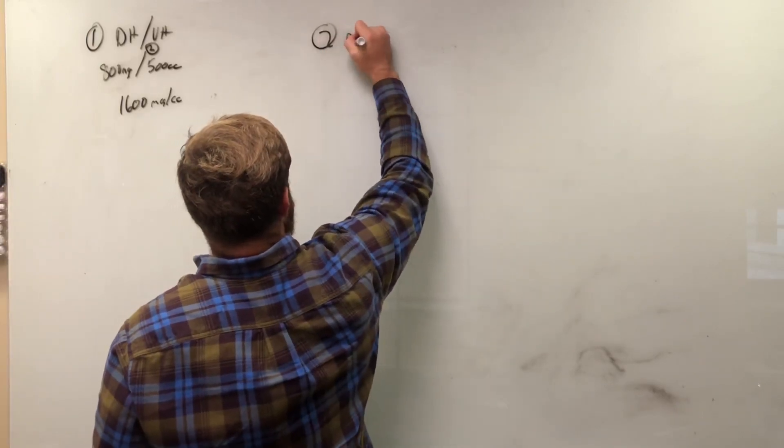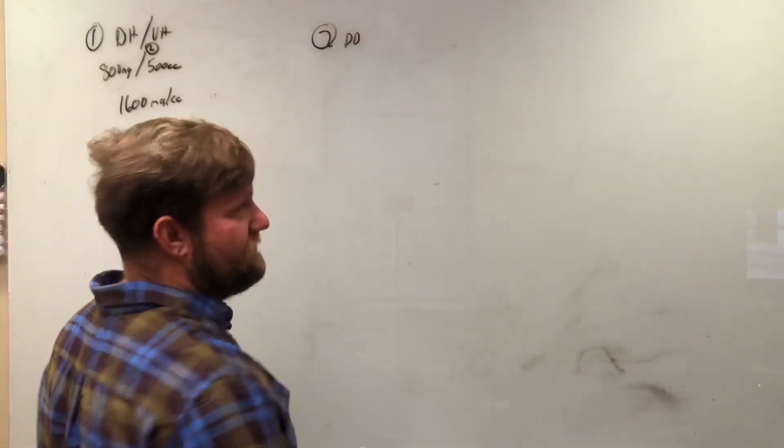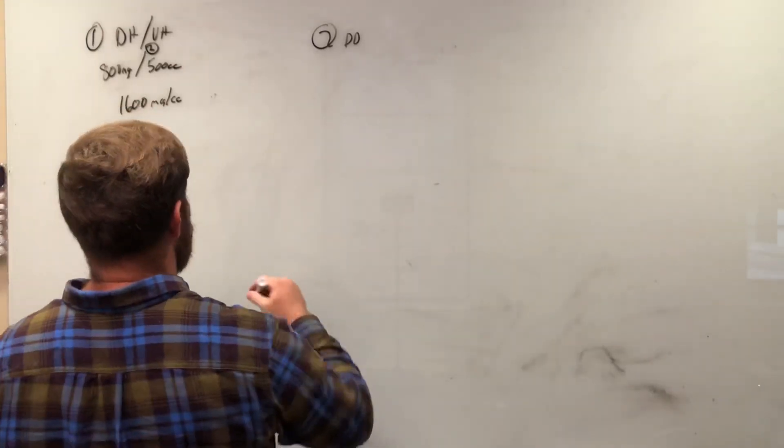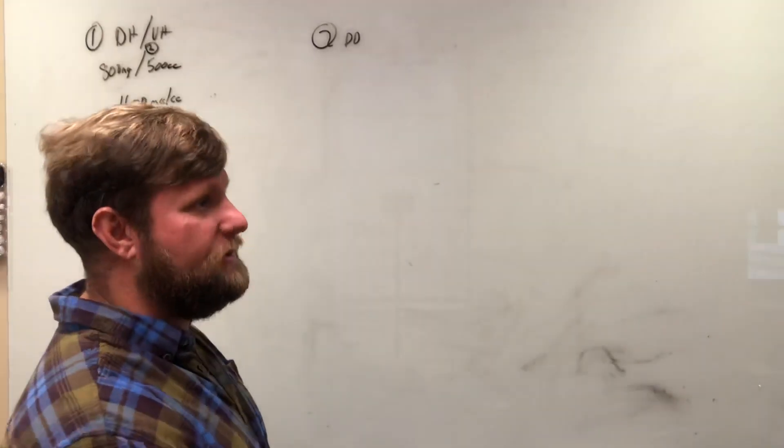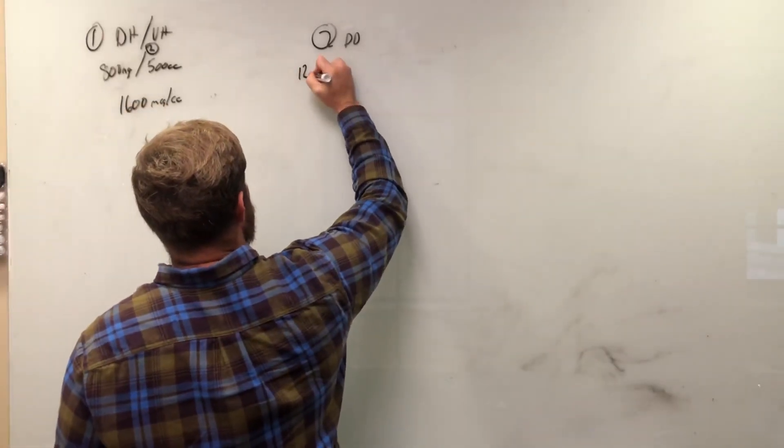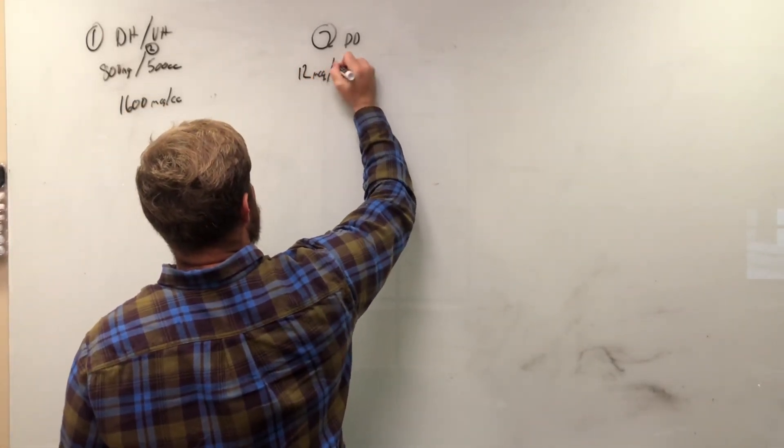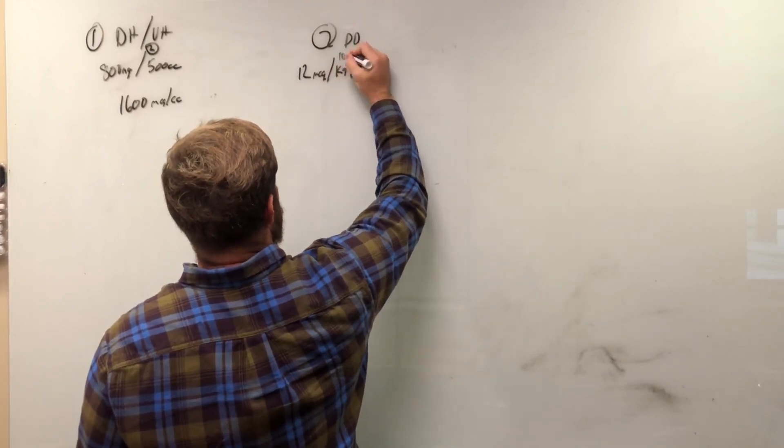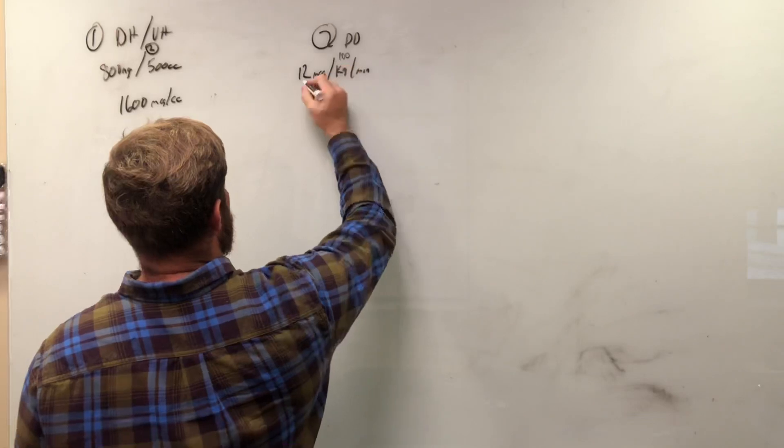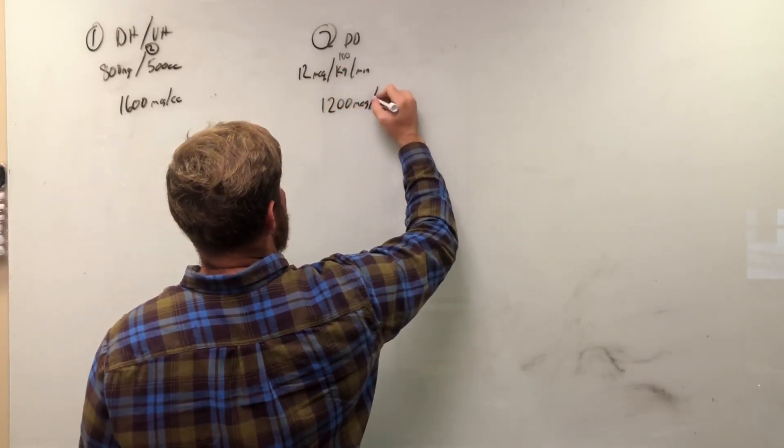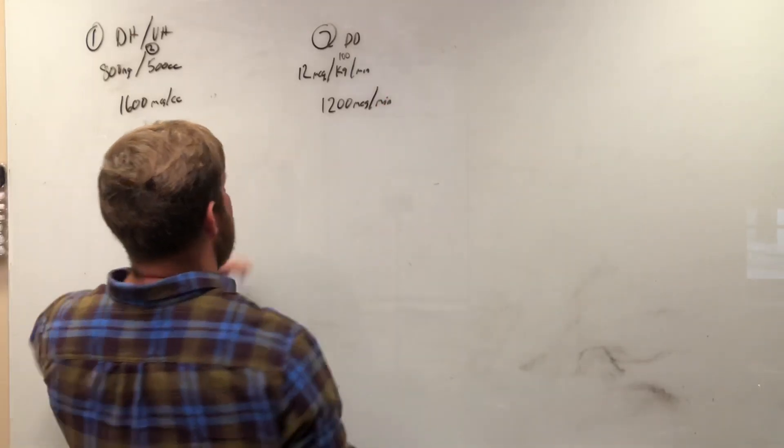Now what's my desired dose? So let's say we have anywhere from two to 20 micrograms per kilogram per minute. Arbitrary number, let's do 12. So we're going to do 12 micrograms per kilogram per minute. And let's say we have a 100 kilogram patient. So 100 times 12, 1200 micrograms per minute. So we have our desired dose.